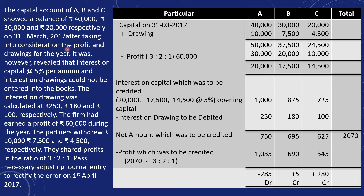Drawings: A Rs. 10,000, B Rs. 7,500 and C Rs. 4,500. Total amounts become Rs. 50,000, Rs. 37,500 and Rs. 24,500. Minus profit — which is given as Rs. 60,000 — distributed in ratio 3:2:1, giving A Rs. 30,000, B Rs. 20,000 and C Rs. 10,000. The resulting opening capital amounts are A Rs. 20,000, B Rs. 17,500 and C Rs. 14,500.